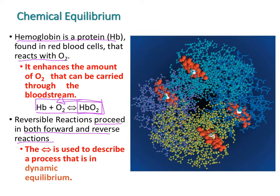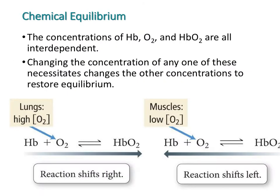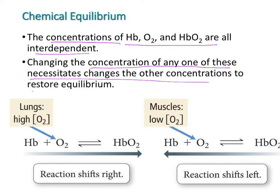Overall, this reaction is in dynamic equilibrium, which we show through a double-headed arrow. In chemical equilibrium, all the concentrations of the species in a reaction are interdependent — if you change the concentration of one, it's going to change the concentration of everything else in order to restore equilibrium.